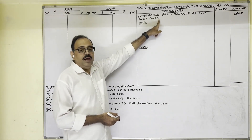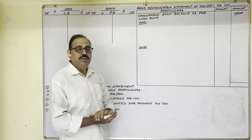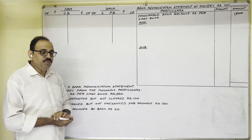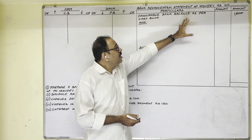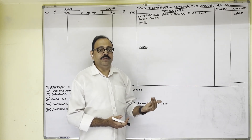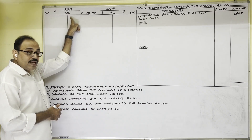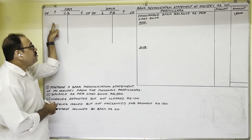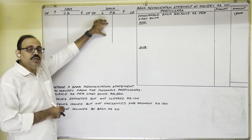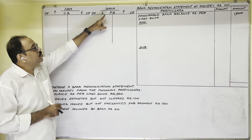The heading is: Bank Reconciliation Statement of Vasudev as on dash — sometimes a date is given; here it is not provided. Vasudev is a sole proprietor running a current account with one bank. Between the bank and the firm, some transactions occur. He records all these in the cash book — specifically the debit and credit bank columns of the triple column cash book. Similarly, the bank records those transactions in their ledger, and the copy given to us is known as the passbook.